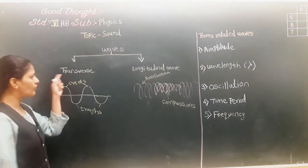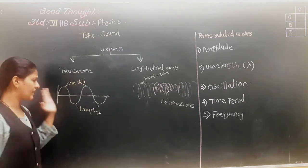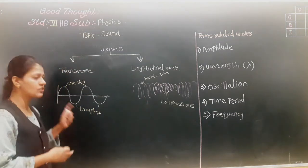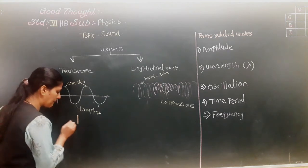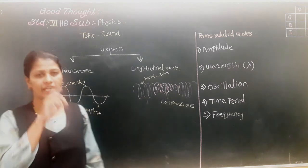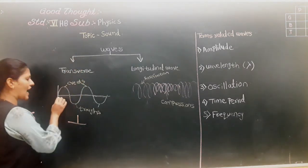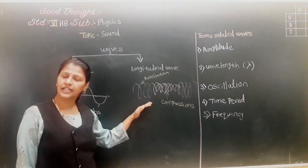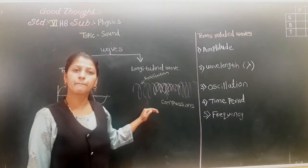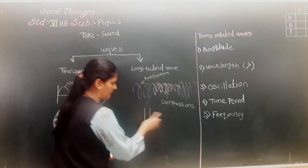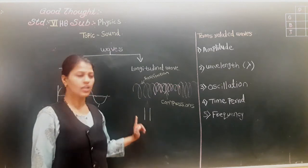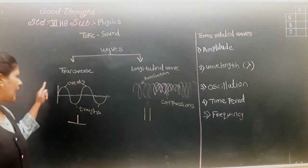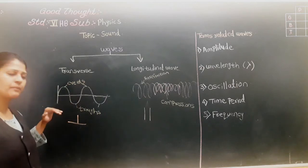In transverse waves, the particles of the medium are vibrated perpendicular — that means 90 degrees — to the direction of the wave. In longitudinal waves, the particles of the medium are vibrated in a parallel way to the direction of the wave.